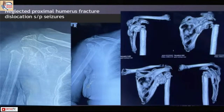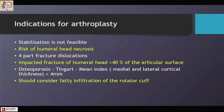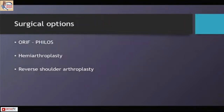This is a two-year-old neglected fracture dislocation — osteosynthesis is out of the picture here and we proceeded with a reverse shoulder arthroplasty. The surgical options are osteosynthesis, hemiarthroplasty, or reverse shoulder arthroplasty. Indications for arthroplasty include risk of humeral head necrosis, impacted fracture of the humeral head involving more than 40%, and always consider the quality of the rotator cuff.